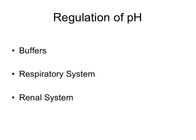The body has three ways to do that. It has a chemical buffer system, you can use your respiratory system, and the final arbiter of our body pH is the renal system. Let's take a brief look at how that works.